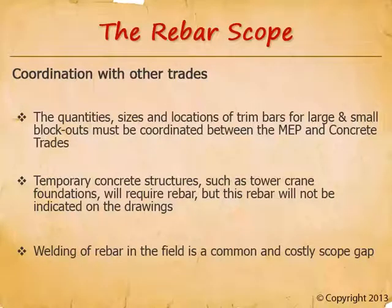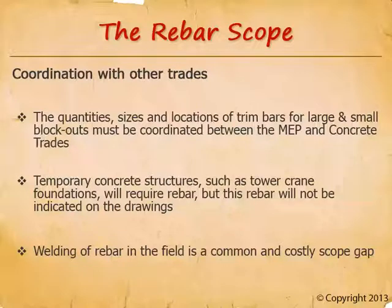Welding of rebar in the field is a common and costly scope gap. Rebar welding requires a special certification, and not that many welders have this cert. Rebar subcontractors don't keep union welders on staff and routinely exclude welding rebar. Structural steel subcontractors exclude this as well because the rebar is not part of the structural steel system, and miscellaneous metal subs exclude it because they don't do rebar. In the end, we've got to convince one of these three subs to do it — our first choice is always the rebar subcontractor, second choice is usually the structural steel sub, and if necessary we go to the miscellaneous metal sub. It may involve one of these subcontractors calling the union hall and finding a welder with this certification that they can hire.